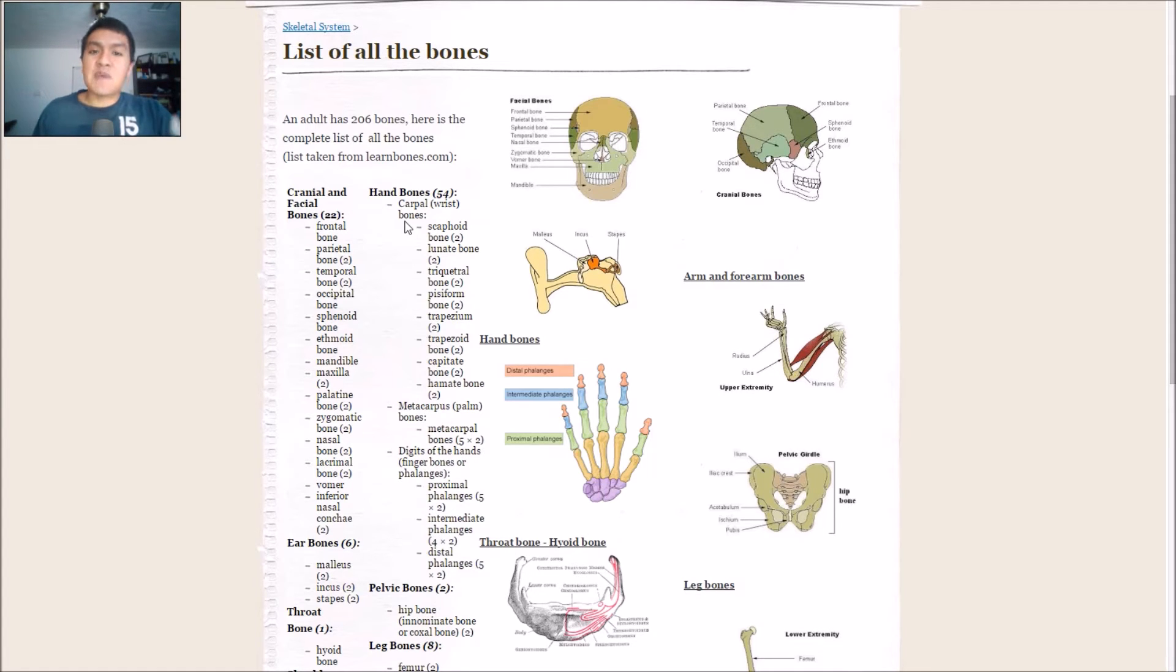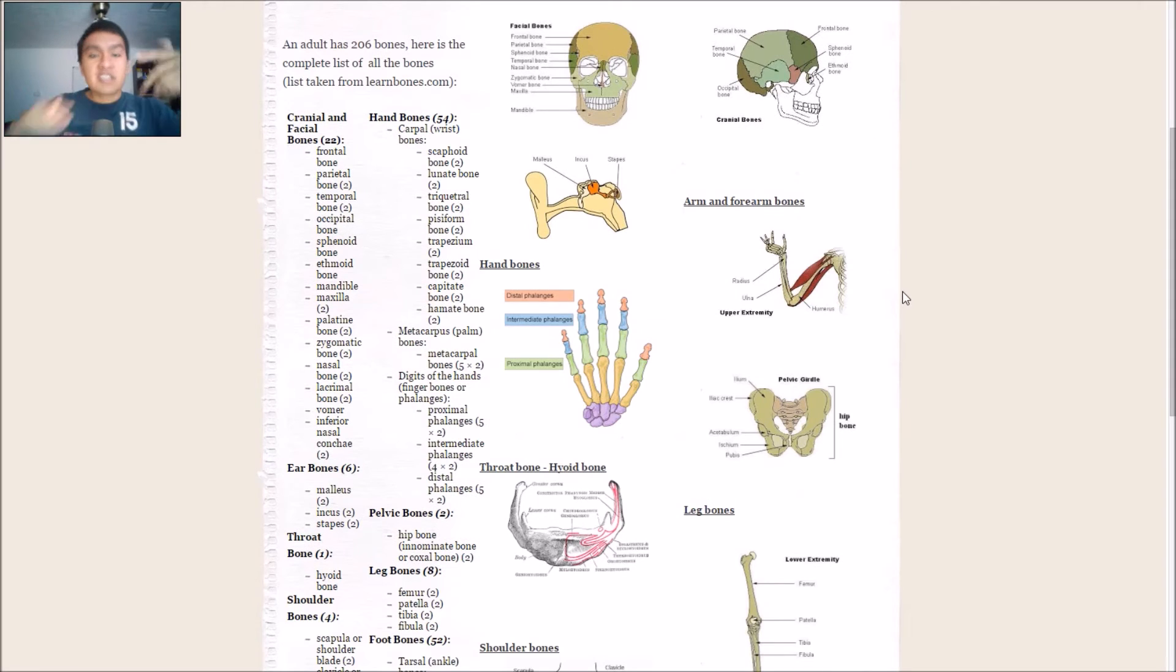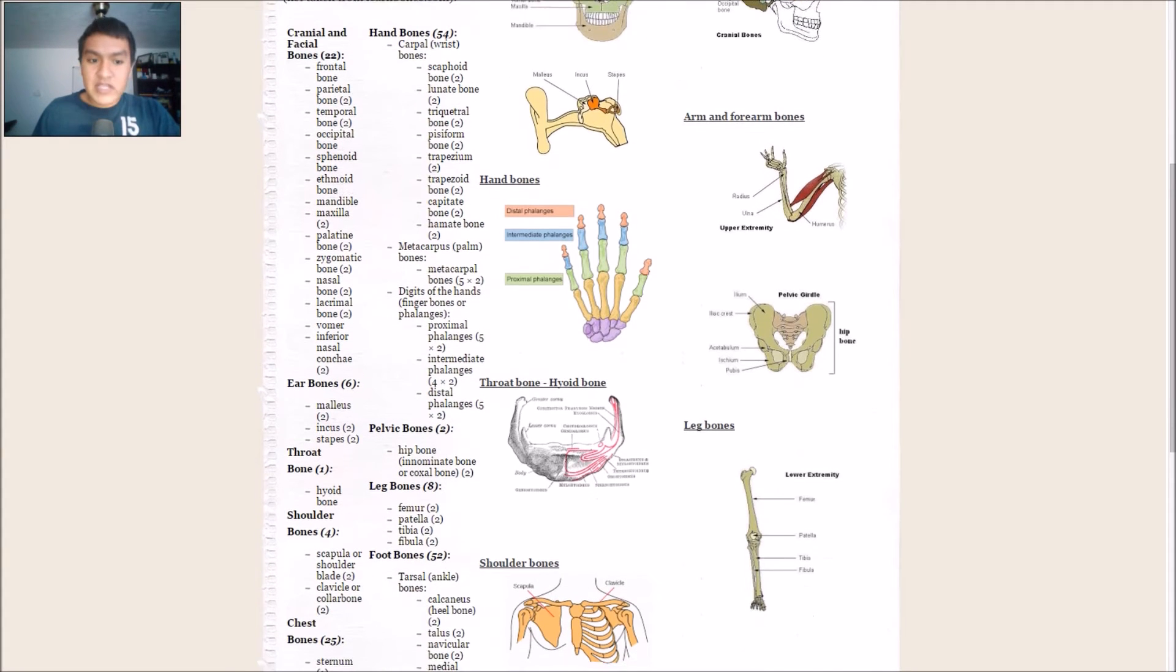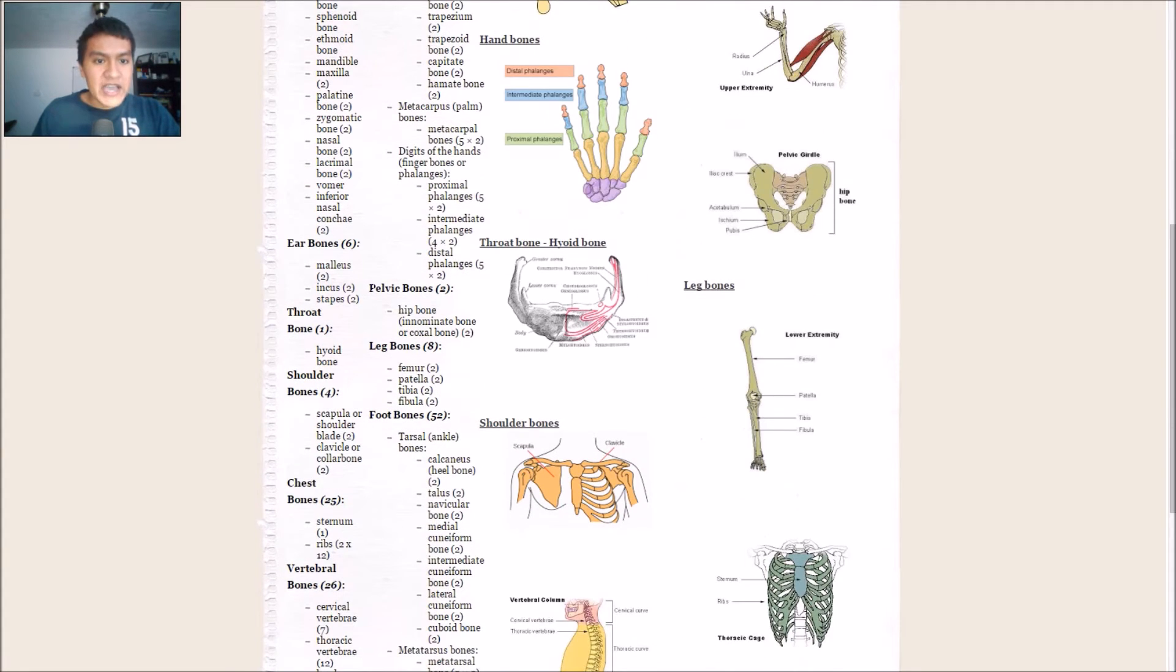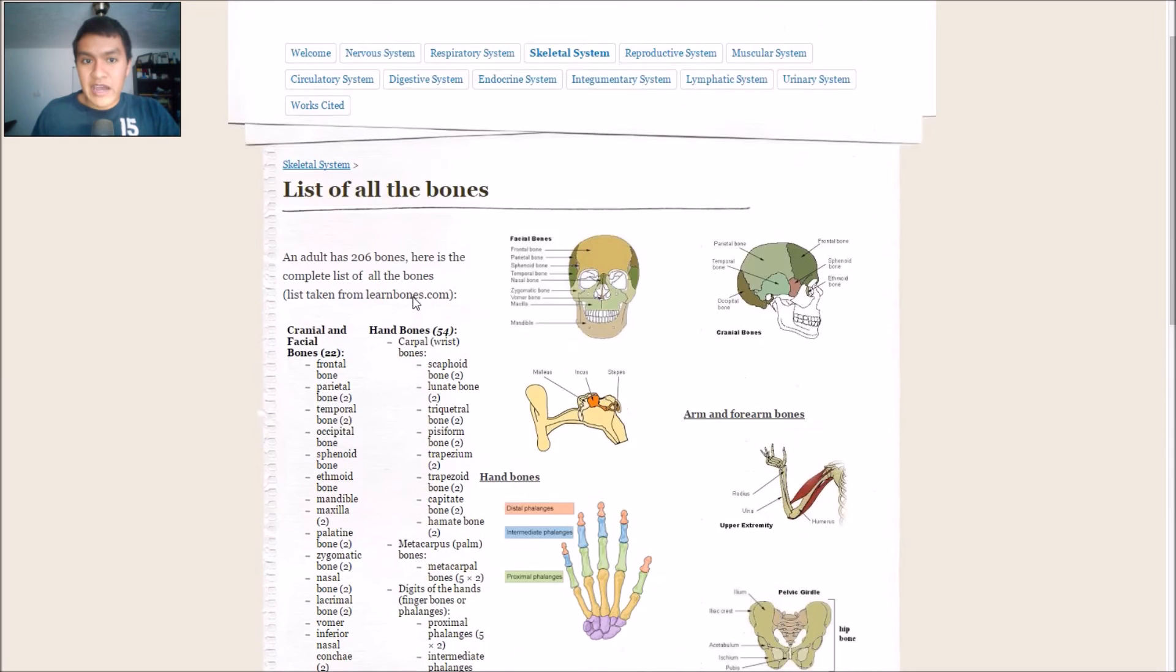Because if you just memorize all the bones, you can list them all off, but you might not really know where those bones belong to. So the extra challenge is to be able to identify all the bones in a specific group. It's really nice because this page has the groupings bolded, so that's going to be a lot of help.